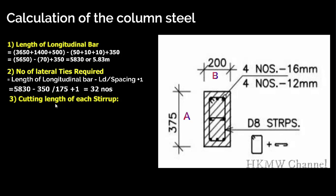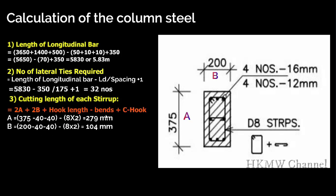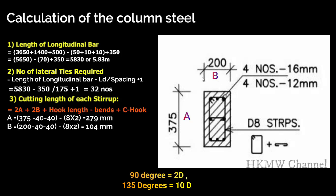Step 3: Calculate the length of each stirrup (8 mm bars). The formula is: 2a + 2b + hook length − bends + c-hook. Here, 'a' is along the column length: 375 − 40 − 40 (clear covers) − 2d (bend reduction = 2 × 8) = 279 mm. 'b' is along the width: 200 − 40 − 40 − 2d (2 × 8) = 104 mm.